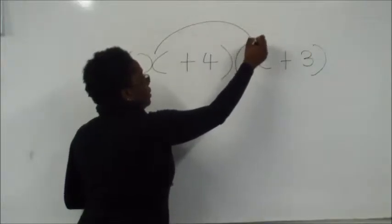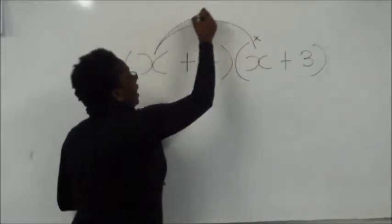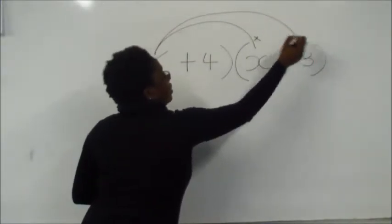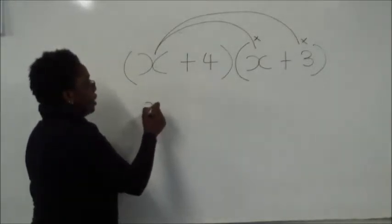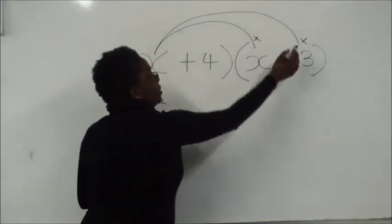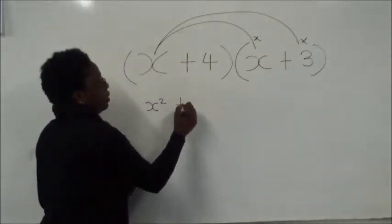So x times x and the same x times 3. X times x gives x squared, and x times positive 3 gives plus 3x.